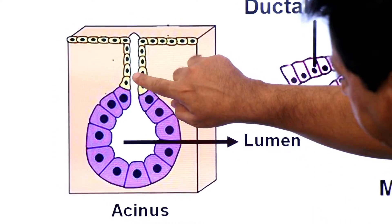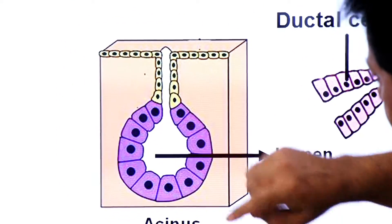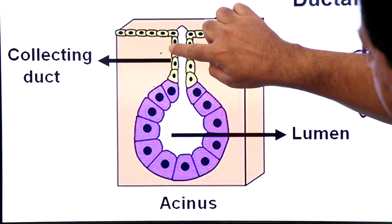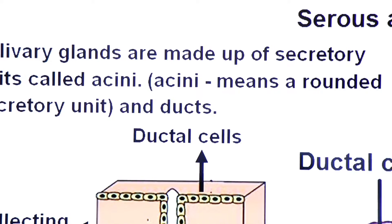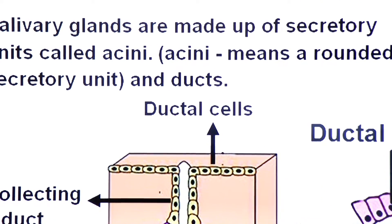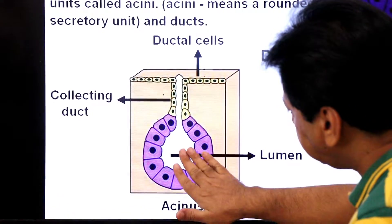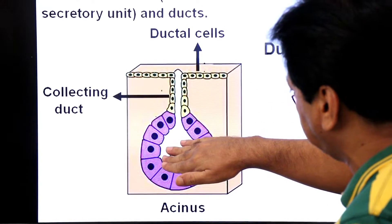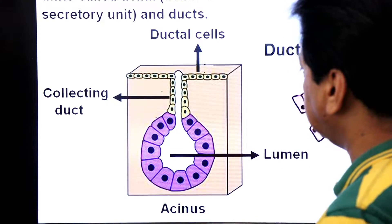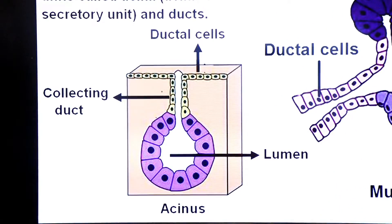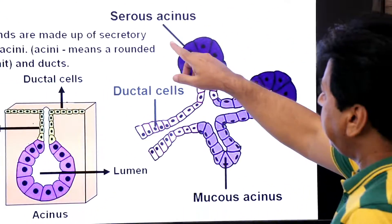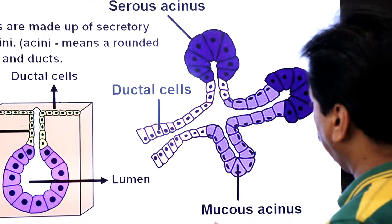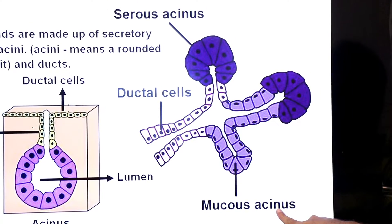The collecting duct is lined by ductal cells. From the acinus, a primary secretion is released, and the ductal cells modify this primary secretion into a secondary secretion — absorbing some ions and releasing some substances. There are two types of acinai in salivary glands: a serous acinus, which secretes serous fluid, and a mucous acinus, which releases mucus fluid.